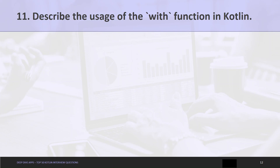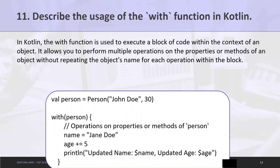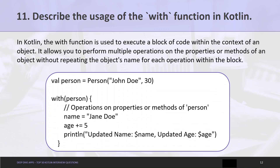Question 11: Describe the usage of the with function in Kotlin. The with function is used to execute a block of code within the context of an object. It allows you to perform multiple operations on the properties or methods of an object without repeating the object's name for each operation. As shown in the given example, we call with in the context of a person object and can access and modify all its properties inside the block.